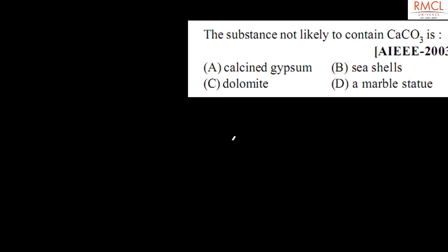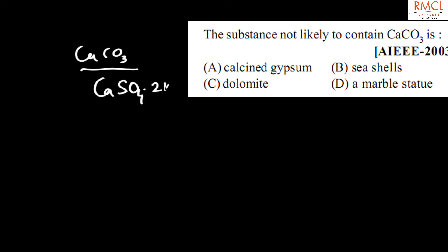The given question, asked in Italy 2003, is: the substance not likely to contain calcium carbonate is... Calcined gypsum does not contain CaCO₃, as gypsum is CaSO₄·2H₂O — it is a sulfate, not a carbonate. So gypsum is the correct answer, and option A is correct for this question.